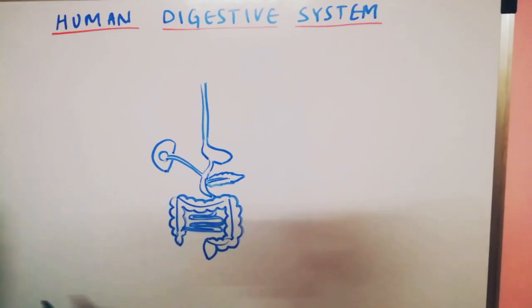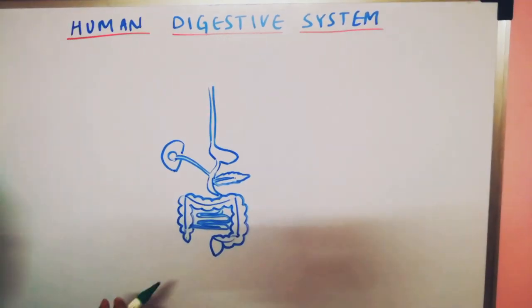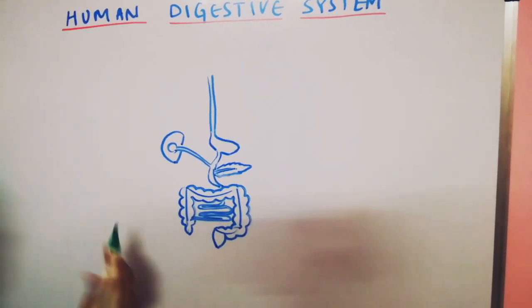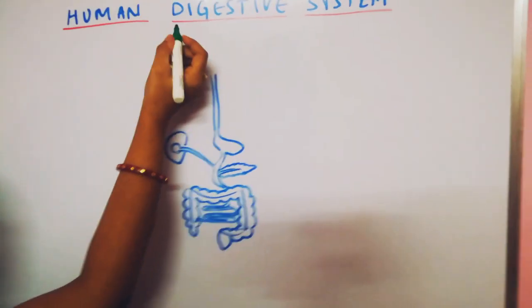Then the next thing is the drawing of a human body. Now, many students find difficulty in drawing the human body, the outer structure. So what you have to do is, I will just tell you an easy method.